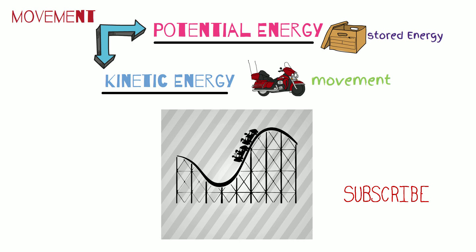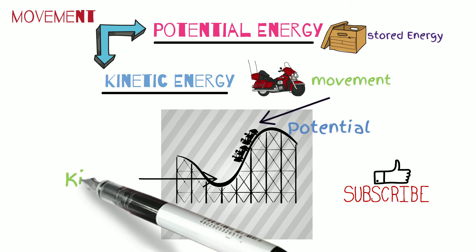What about this roller coaster? Where is the potential energy and which is the kinetic? At the top of the roller coaster is potential and once the roller coaster moves all the way down this is kinetic energy.